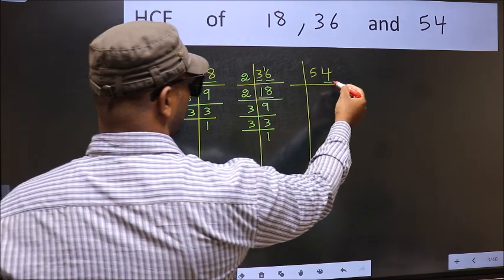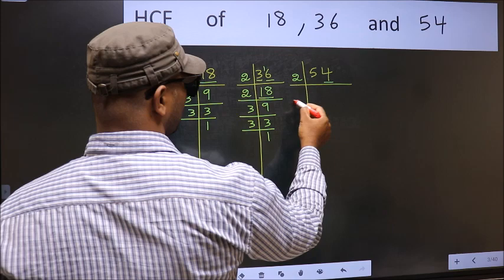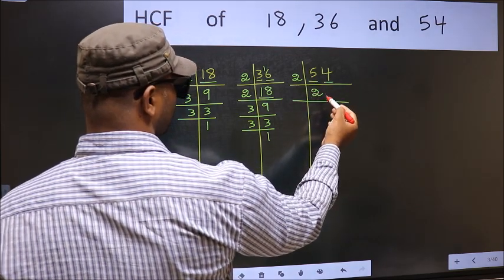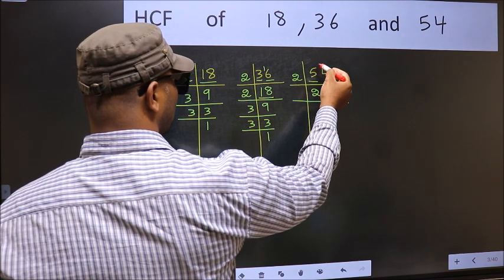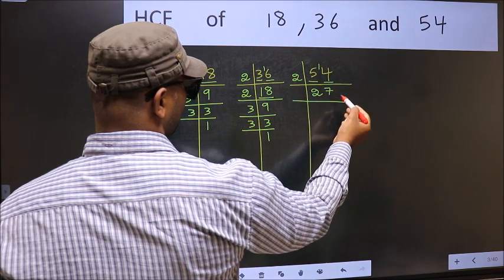Now the other number. Last digit 4, even, so take 2. First number 5. A number close to 5 in the 2 table is 2 times 2, which is 4. 5 minus 4 is 1, carried forward makes 14. When do we get 14 in the 2 table? 2 times 7 is 14.